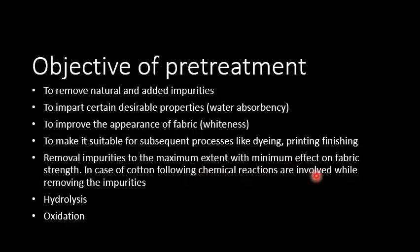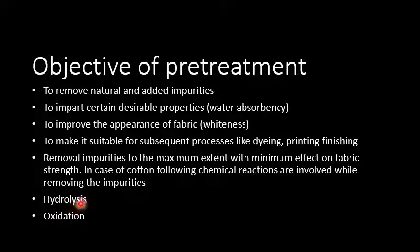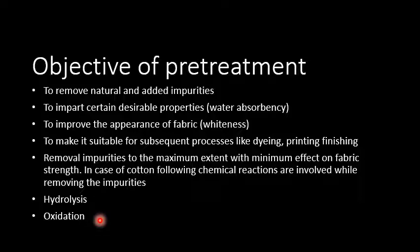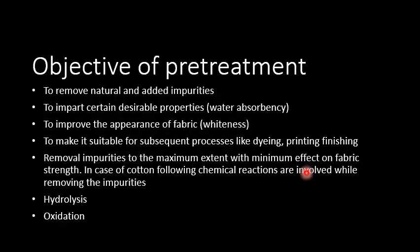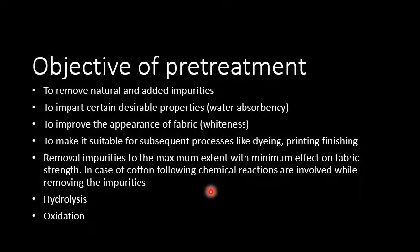In case of cotton, following chemicals are involved while removing impurity: hydrolysis and oxidation. हम hydrolysis और oxidation के जरिए impurity को remove करते हैं। इस तरीके से हम maximum extent को minimum effort के साथ remove कर सकते हैं, और strength का loss बहुत कम होता है। जब हम chemical apply करते हैं, fabric में damage कम होता है। इन दो chemicals के जरिए minimum strength loss के साथ impurities remove कर लेते हैं।